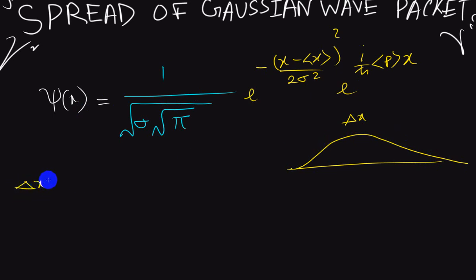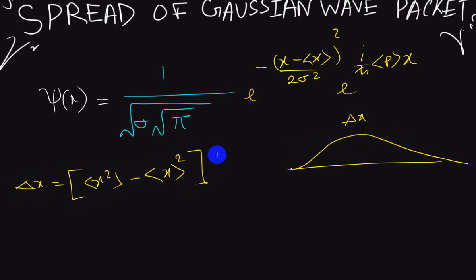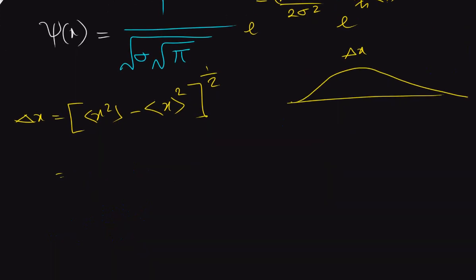The formula for uncertainty is given by the square root of the expectation value of x squared minus the expectation value of x, that whole squared. It deserves its own derivation, so I am not going to derive it for now. If you request, I will post a video on how to derive this expression later.